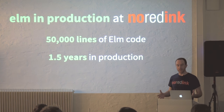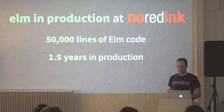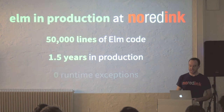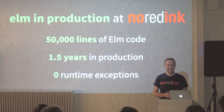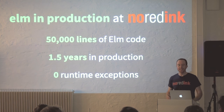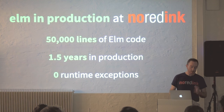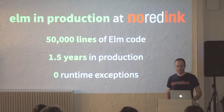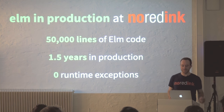We've been using it in production for about one and a half years, and in that entire time across our 50,000 lines of Elm code, the total number of runtime exceptions we've gotten from our Elm code is zero. That sounds like a preposterous claim — like, how can that be possible? Are you just cheating? The answer is no, we're not cheating. We also have plenty of JavaScript code, React code that we used before Elm, which throws all sorts of runtime exceptions because we're programmers and we make mistakes.